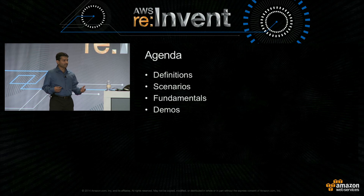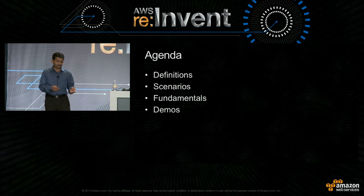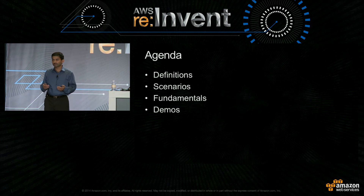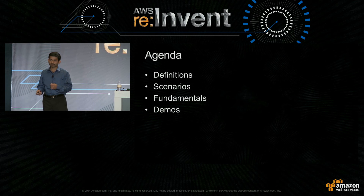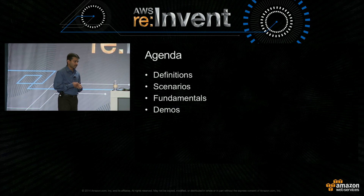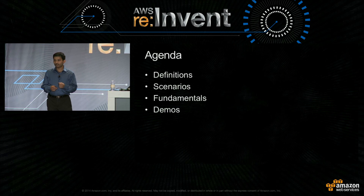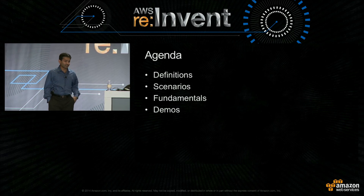We'll start with a couple quick definitions. Next, we'll look at the main delegation scenarios. Then we'll cover some delegation fundamentals. And finally, we'll look at the scenarios in action using demos — quite a few demos. I hope at the end of this session you would walk away with a solid understanding of how you can securely delegate access to your AWS environment.